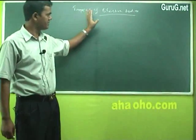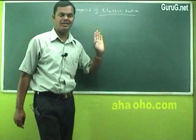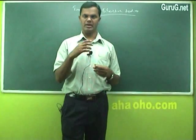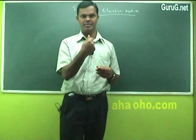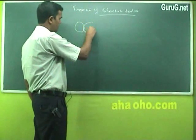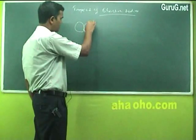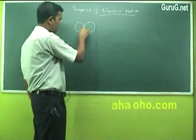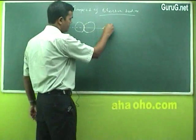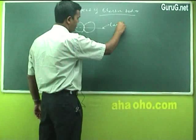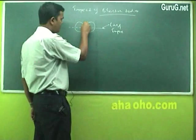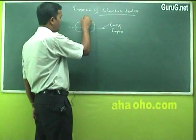Impact is a sudden act or force between two bodies — a sudden short-term interaction between two bodies. This particular line is called the line of impact, and this particular point and line is called the plane of impact.